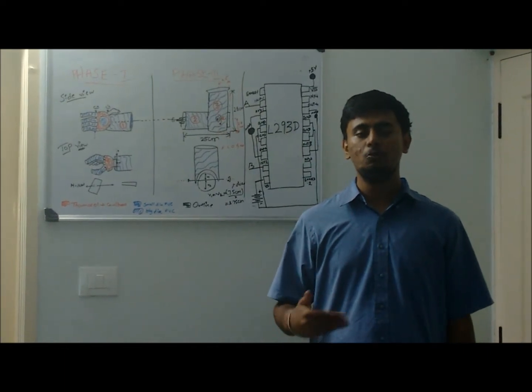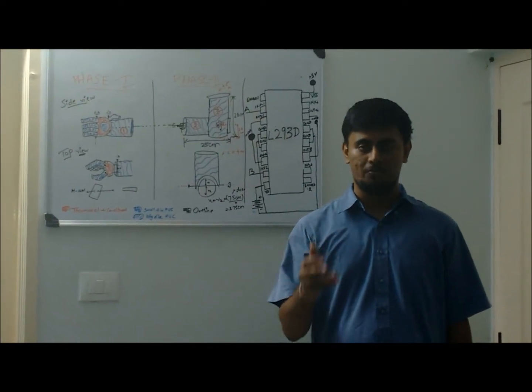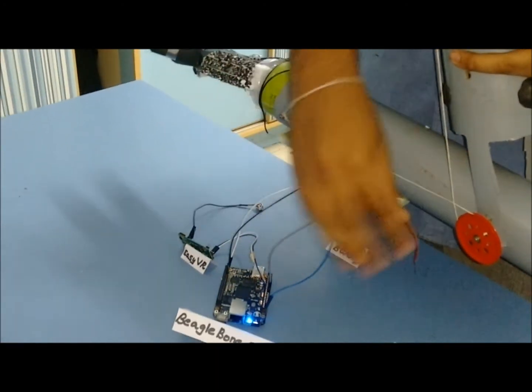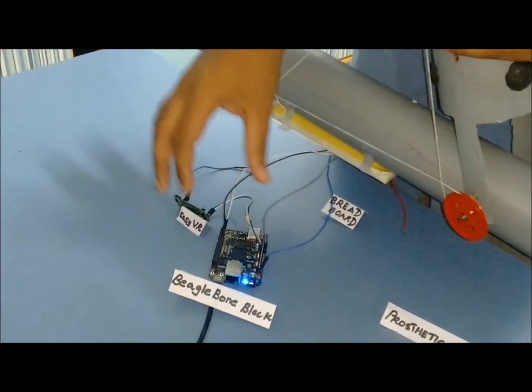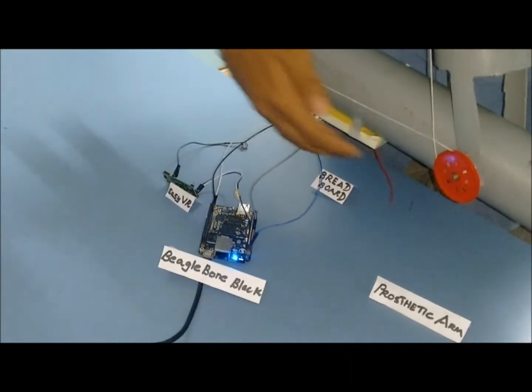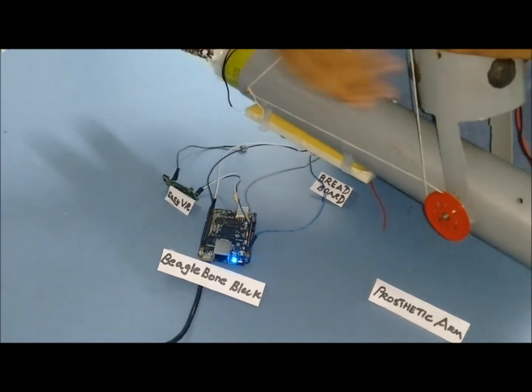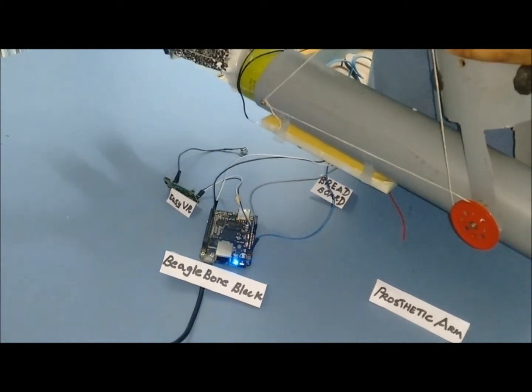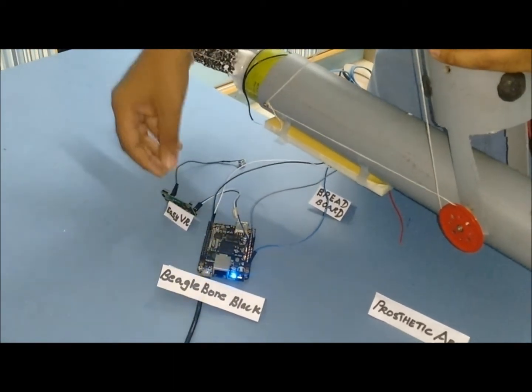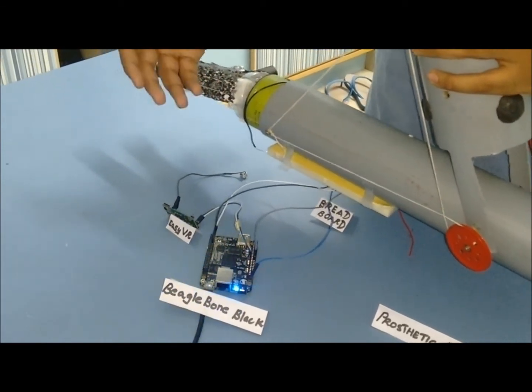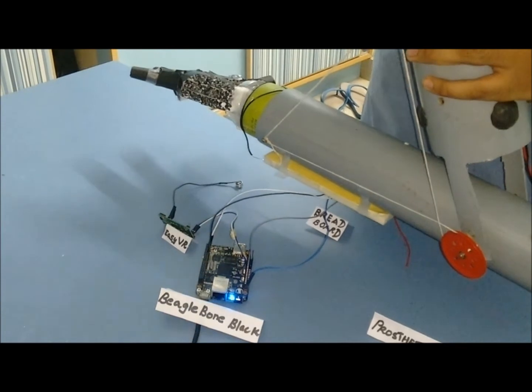So let's move to the working principle of this. As you can see here, these are the main TI components. Firstly is the beagle bone black. The L293D connected here on a breadboard as you can see here. And then next this is the prosthetic arm setup. Now we have also used an additional module that is the EZVR for the voice recognition. So how does this work? Let me first explain its working.